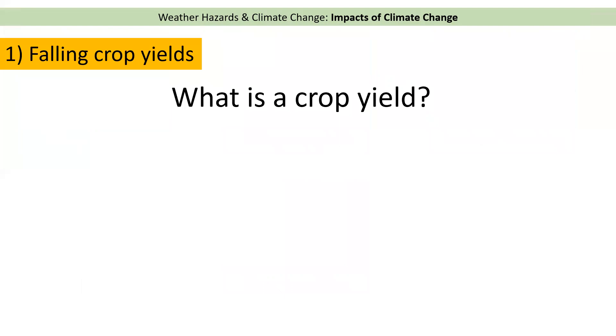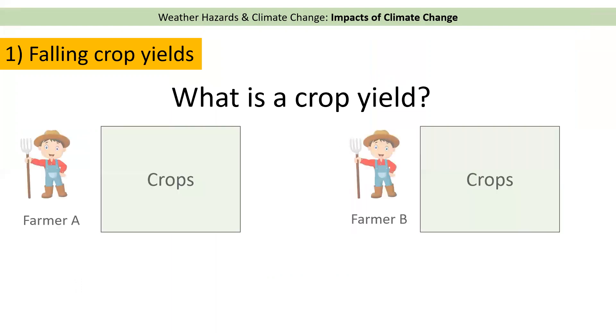The first impact is falling crop yields. Before we begin we need to understand what we mean by a crop yield. We're going to have a look at two different farmers — Farmer A and Farmer B.